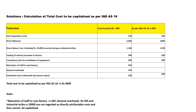Very easy. Copy all the particulars given in the first column, then write all the cost incurred in the second column, and in the next column put the solution. As per Indian Accounting Standard 16, take all items which are directly related to the construction of a new factory. Do not include relocation of staff to the new factory, general overhead, and the Rs. 10,000 for the industrial strike. Add the total to get your answer. Total cost to be capitalized as per Indian Accounting Standard 16 is Rs. 4,000.